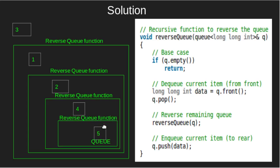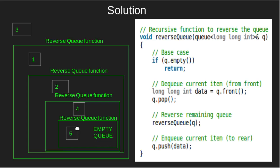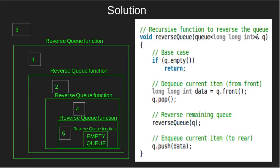Thus, in the reverse queue function, we check if the queue is empty or not. Here, the queue is not empty. Thus, we'll store the front element in data and dequeue the queue, i.e. pop 5. Now, we'll call the reverse queue function for the remaining queue. Thus, in the reverse queue function, we check if the queue is empty or not. Here, the queue is empty. Thus, we'll return.